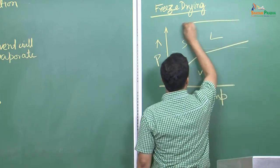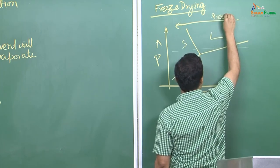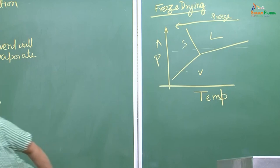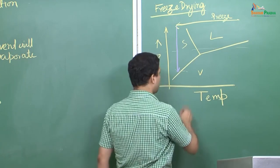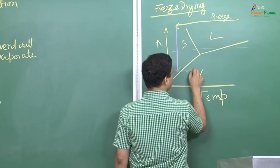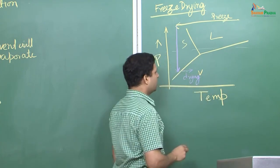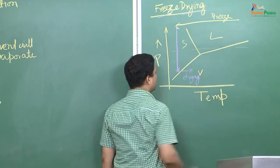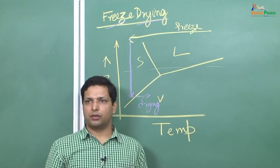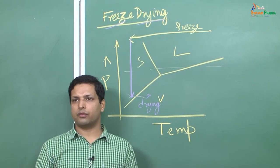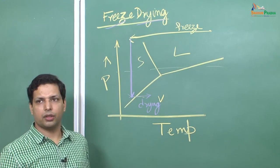You take the solution and decrease the temperature — initially your temperature would be on the higher range, so you first freeze it. This is the freeze step of freeze drying. Then you suddenly drop the pressure. When you drop the pressure and allow the temperature to return to normal, the solvent will start to sublimate. This is the drying step. Therefore it is called freeze drying: first decreasing the temperature, then decreasing the pressure, so the liquid directly sublimates from solid to vapor, leaving behind the particles of solute.